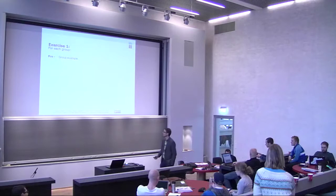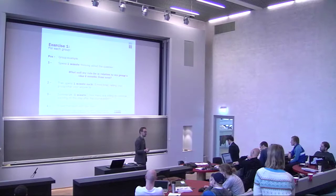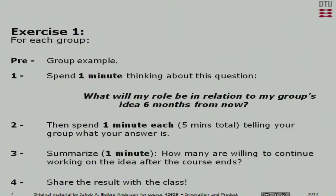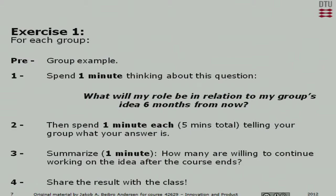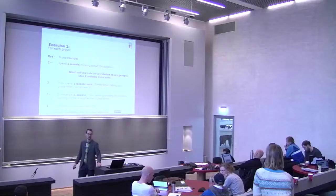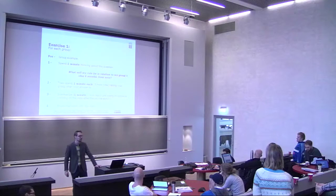What I'd like you to do now is — each person individually, not each group — sit there thinking for a minute about what you think you'll be doing with regards to this idea six months out. As you just heard, it's completely legitimate to say you're not going to do anything about this six months out and you're not going to be a part of this. After that, I'd like you to summarize your thoughts to your group — five minutes in total. Finally, we'd like just a few of you to summarize to the class what you came up with. One minute thinking by yourself, one minute telling your group, and then a quick round of inputs from the class.